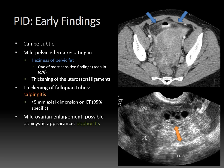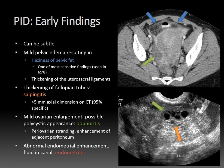Here's an ultrasound case showing that tubal thickening. You might also see mild ovarian enlargement and even a possible polycystic appearance in the setting of oophoritis, or ovarian inflammation, as you can see here. Periovarian stranding and enhancement of the adjacent peritoneum can also occur. Finally, if you have abnormal endometrial enhancement with fluid in the endometrial canal, that can be a sign of early endometritis, as in this case.